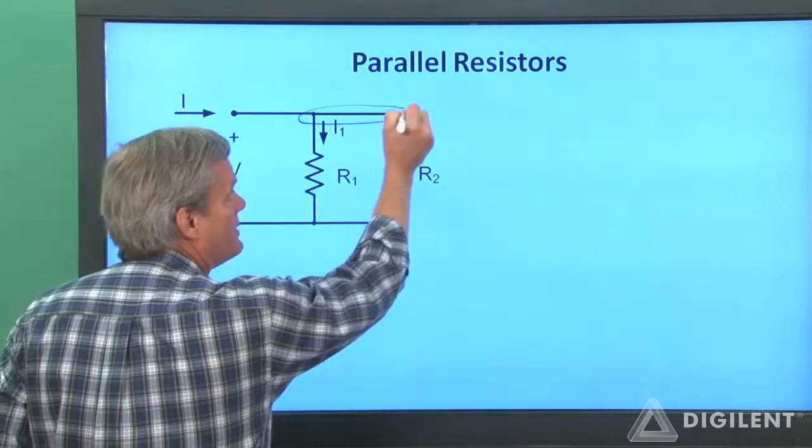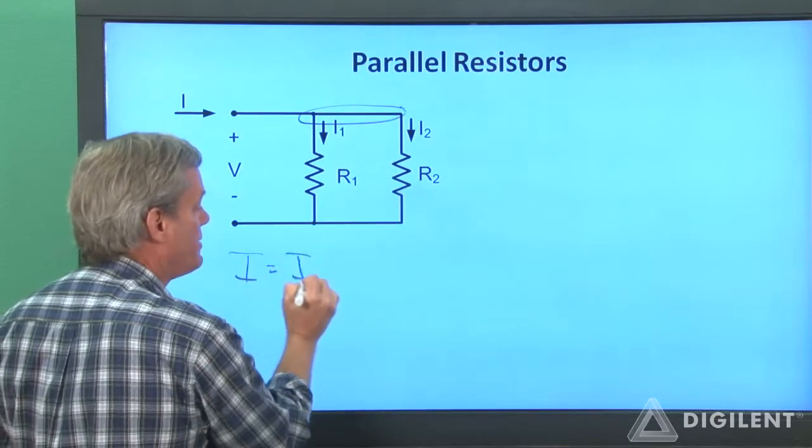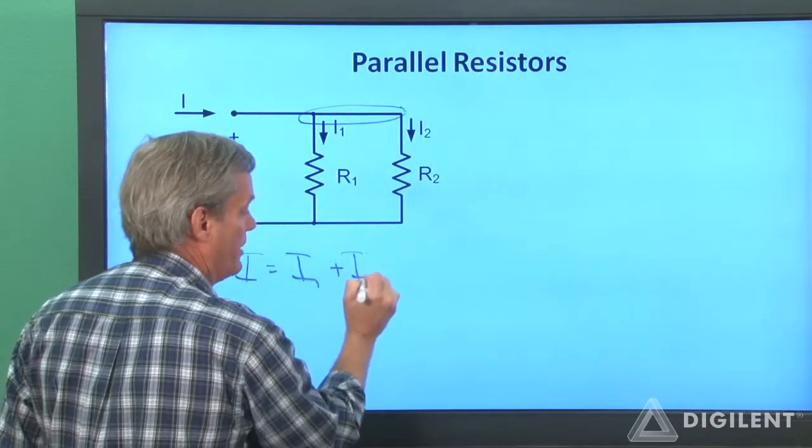If I do KCL up at this node, I see that the current I is equal to the sum of the currents I1 and I2.